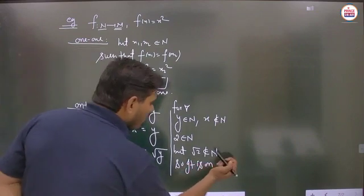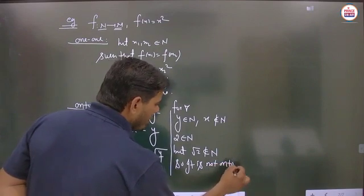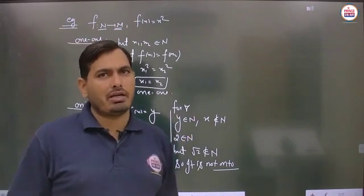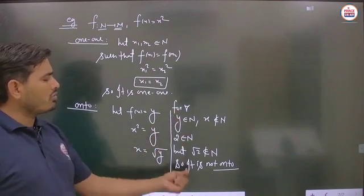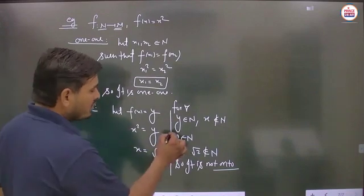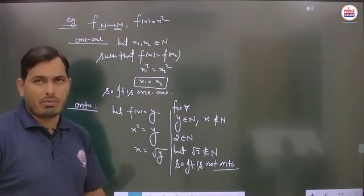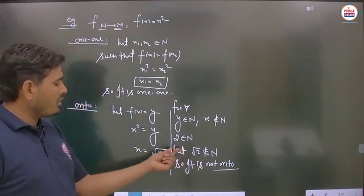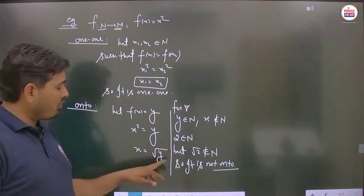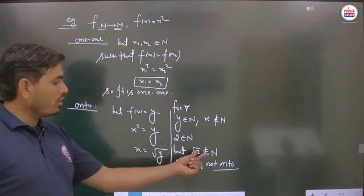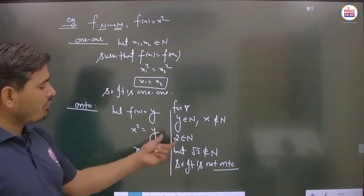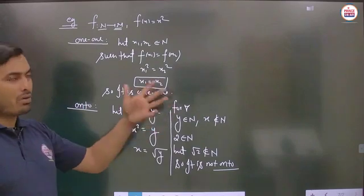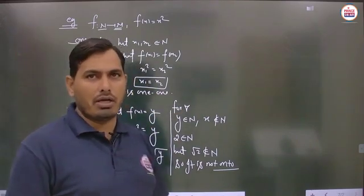For y = 2 ∈ ℕ, x = √2 which does not belong to ℕ. So for some codomain element, no preimage exists in the domain. Therefore, f: N→N, f(x) = x² is not onto — it is an into function.